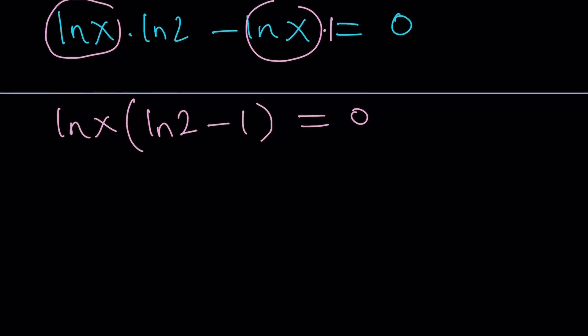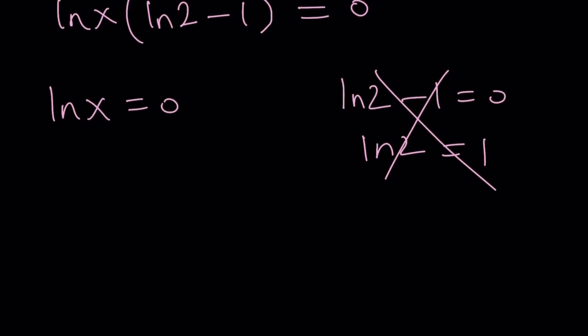So we have two factors here. Let's set each one equal to 0. ln x equals 0. And ln 2 minus 1 equals 0. This implies ln 2 equals 1. But we do know that this is totally incorrect and false and wrong. So we're going to go with the other case, which is ln x equals 0. And what is that supposed to mean?